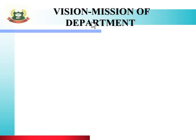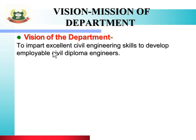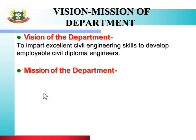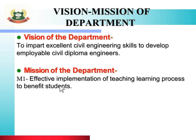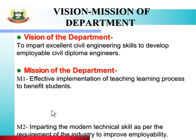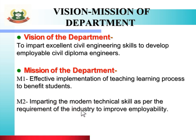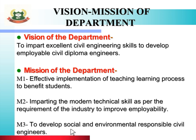First, let us see the Vision and Mission of the Department. Vision: To impart excellent civil engineering skills to develop employable civil diploma engineers. There are three missions: Mission one is effective implementation of teaching learning process to benefit students. Mission two is imparting modern technical skills as per industry requirements to improve employability. Mission three is to develop socially and environmentally responsible civil engineers.